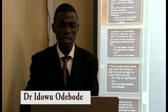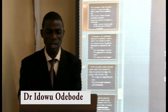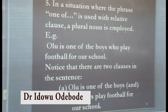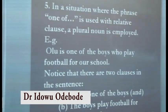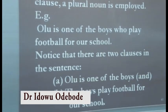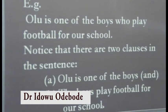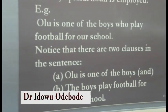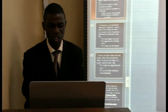Rule 5: In a situation where the phrase 'one of' is used with a relative clause, a plural noun is employed. Example: 'Olu is one of the boys who play football for our school.' Notice there are two clauses: 'Olu is one of the boys' and 'the boys play football for our school.'